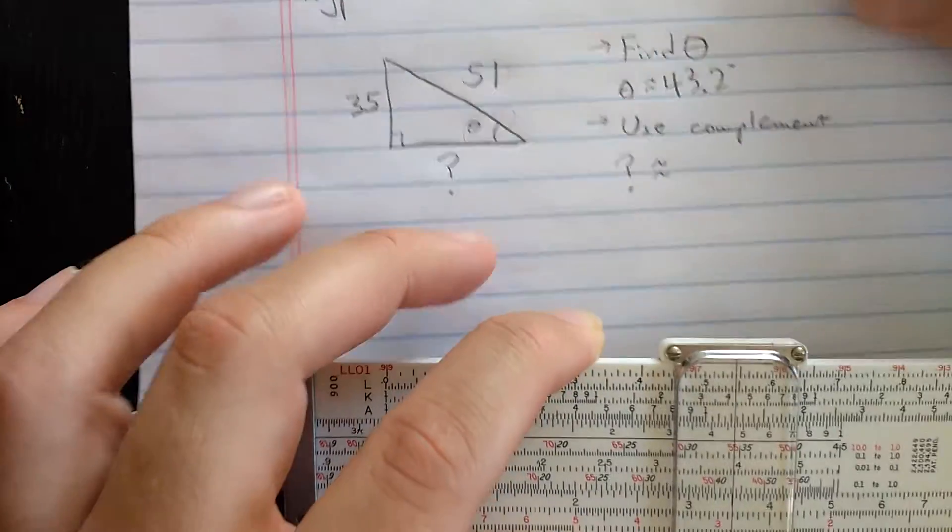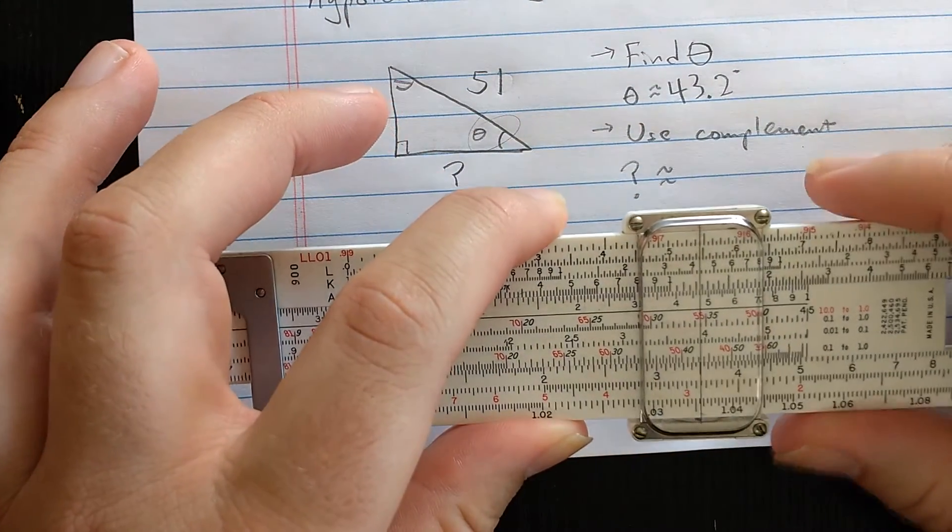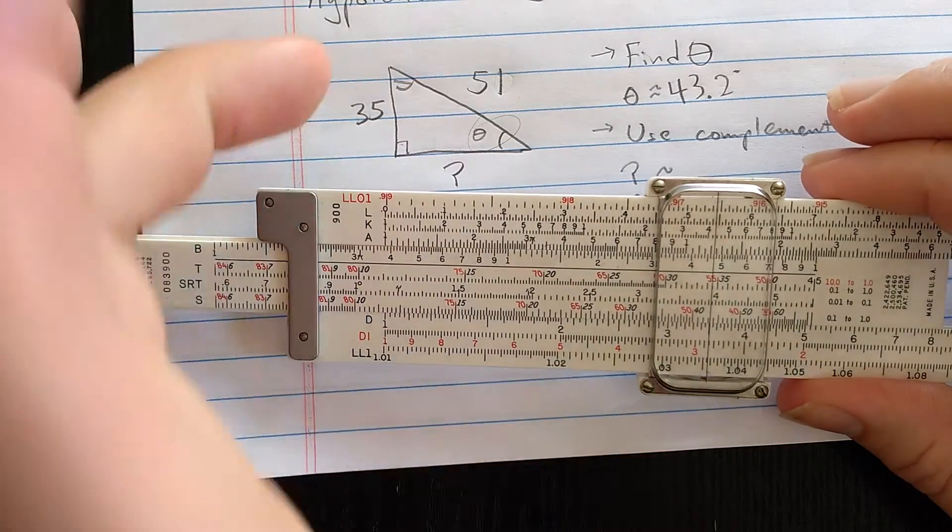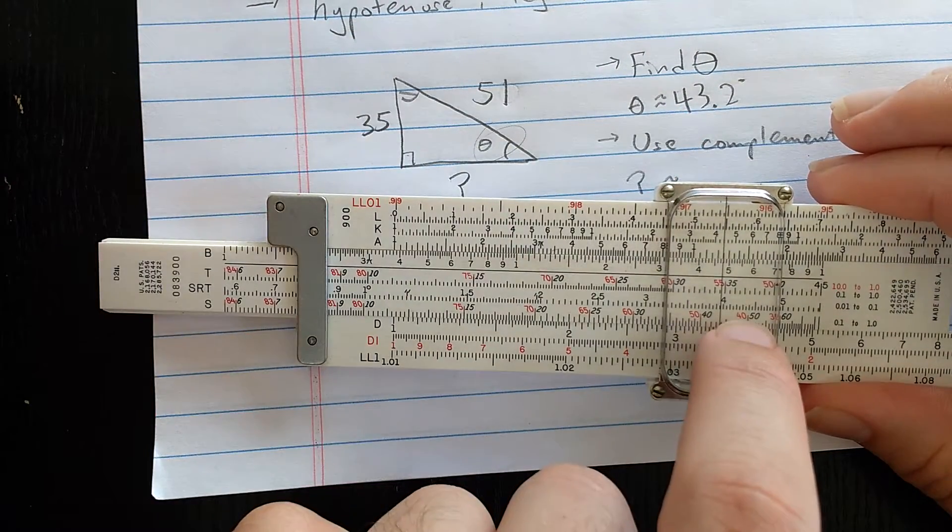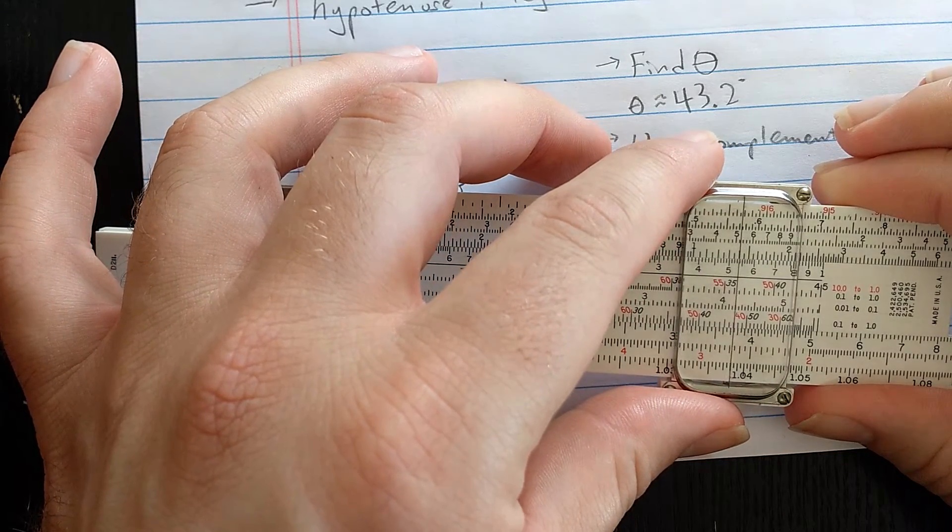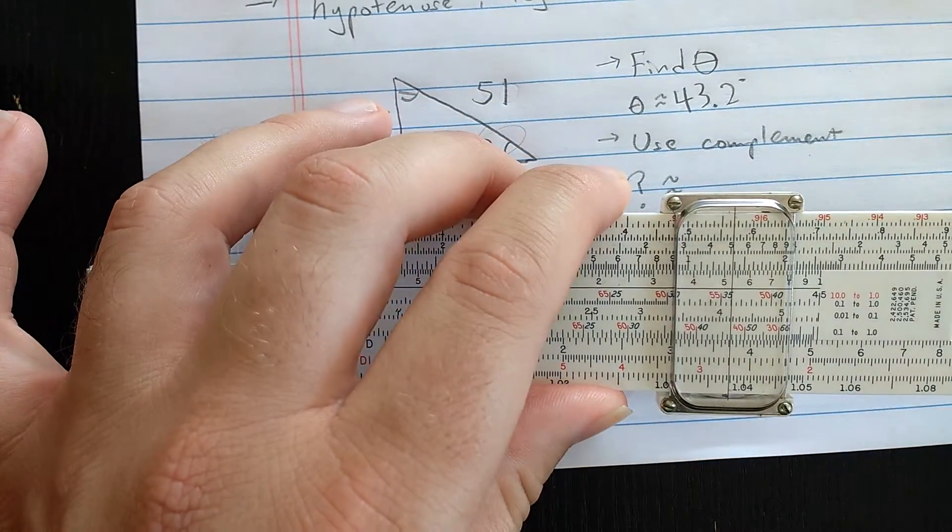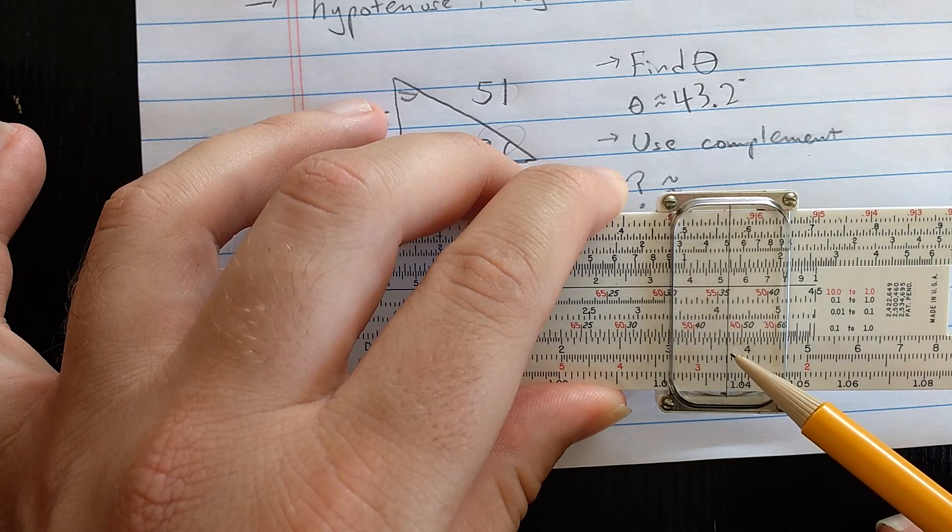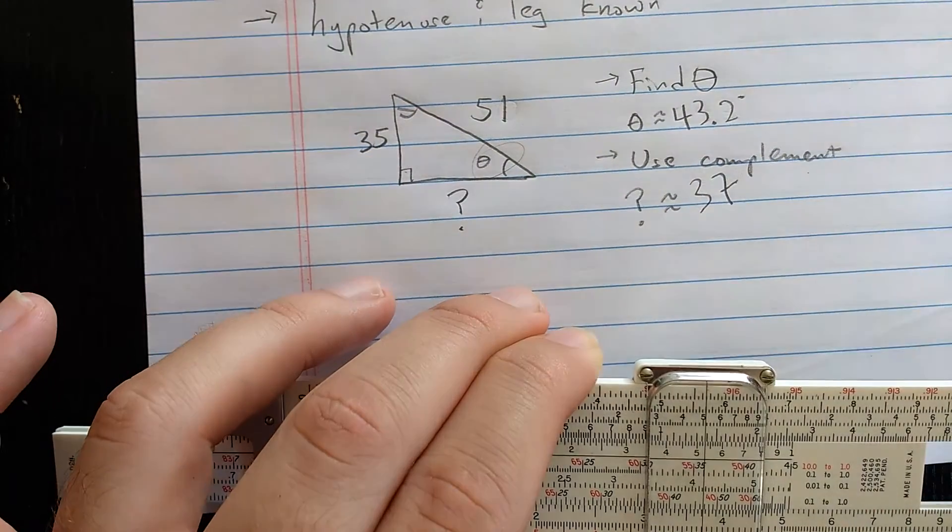Now I'll come to this other angle, which is the complement of theta. I'm going to leave the slide because I'm not changing the triangle. I'm going to read the complement with the red numbers on the S scale, about 46.8. Then I read the result down on the bottom scale, looks like about 37.